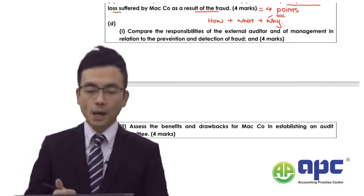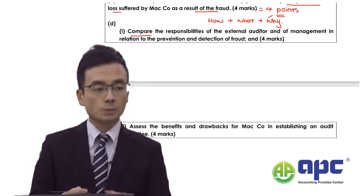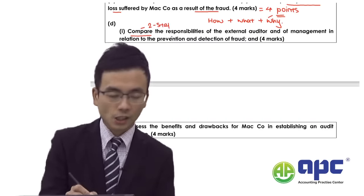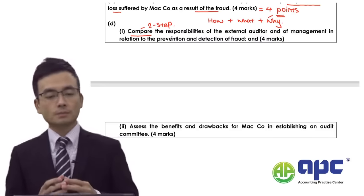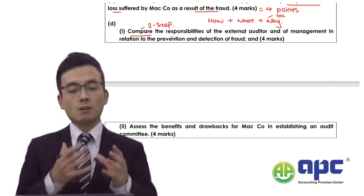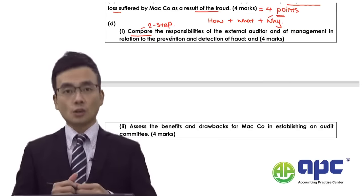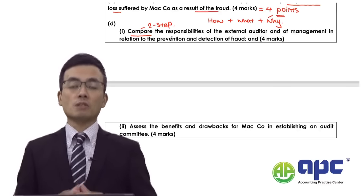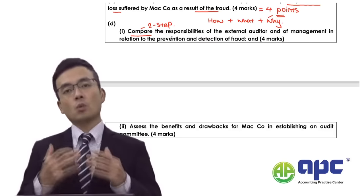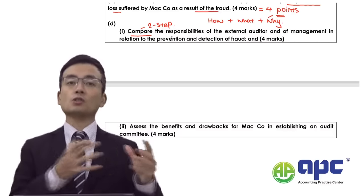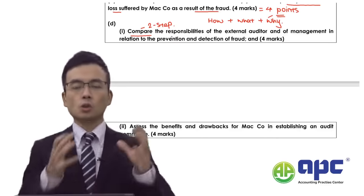Moving on to Part D: compare the responsibilities. Notice the verb 'compare', which means comparison. For comparison questions, include two steps: first a description, then details possibly from the case. We compare the responsibilities of the external auditor and management related to prevention and detection of fraud. Management has primary responsibility, whereas the auditor has secondary responsibility - we obtain reasonable assurance as to whether the financial statements are free from material misstatements due to fraud or error.